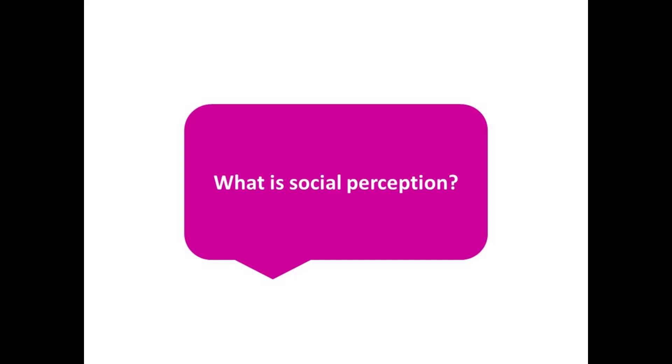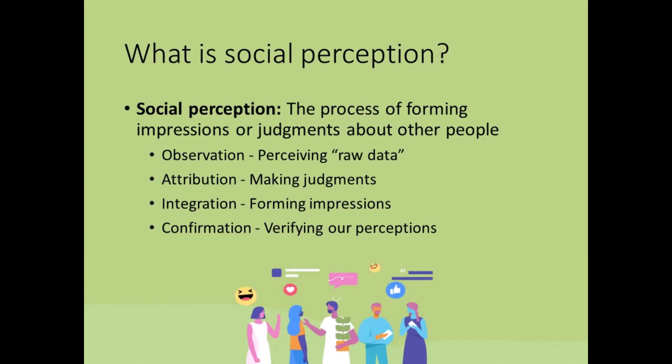What is social perception? Social perception is the process by which we come to understand one another. More specifically, it's the process of forming impressions or judgments about other people. Social psychologists are not only interested in how we form these impressions, but also in how they impact our thoughts, feelings, and actions in social situations.